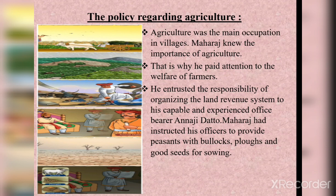Maharaj gave the responsibility to organize a land revenue system to his capable officer Anaji Datto. Maharaj instructed his officers to provide peasants — meaning farmers — with bullocks, plows, and good seeds for sowing.